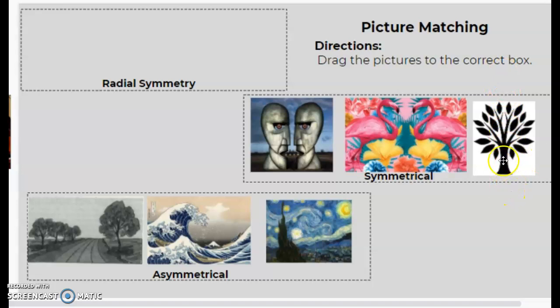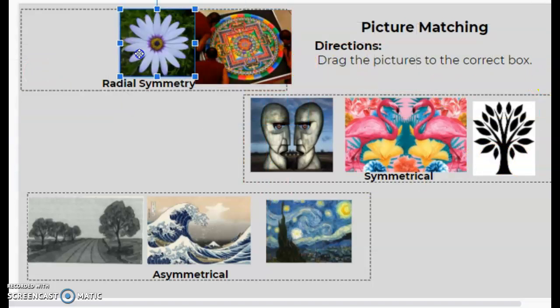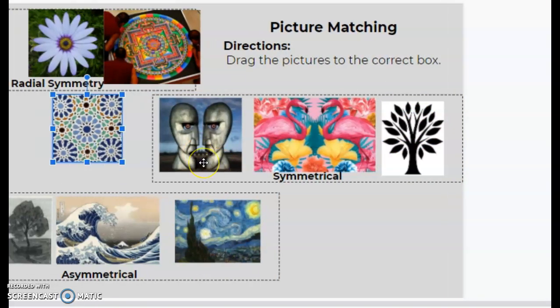So that leaves radial symmetry. We have our mandala, our radial symmetry found in nature, and our Islamic tile.